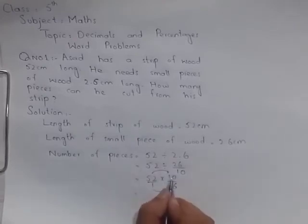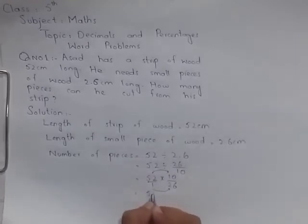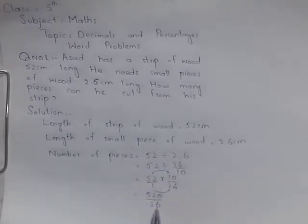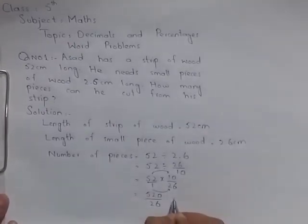52 ko jab hum 10 se multiply karenge to answer is 520 divided by 26. Hamare paas 520 ko jab hum divide karenge 26 se to answer is 20.